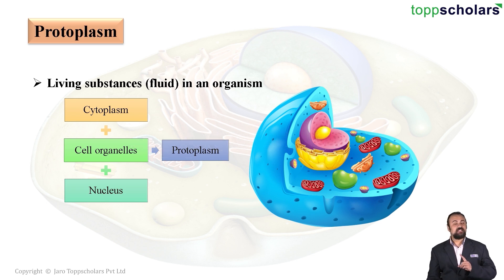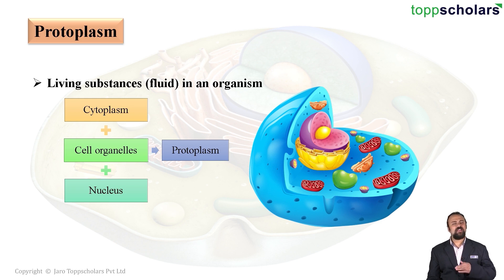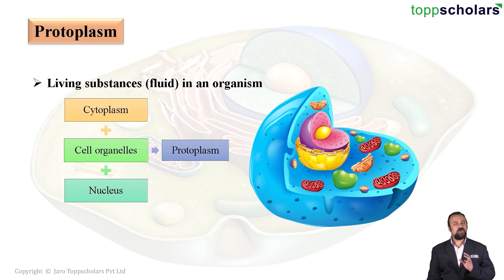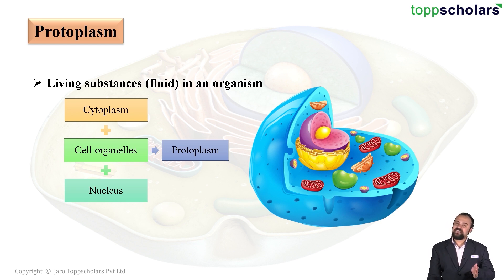If we are studying a plant cell, remember: in the case of a plant cell, the cell wall and the cell membrane are not part of the protoplasm. Whereas in the case of an animal cell, where the cell wall is absent, the cell membrane is also not a part of the protoplasm.